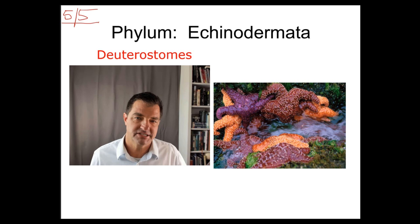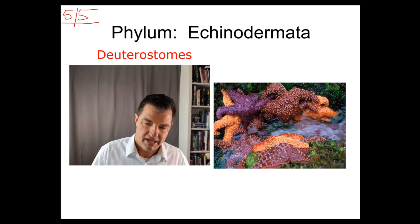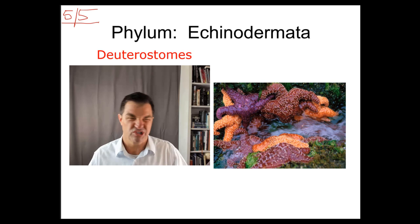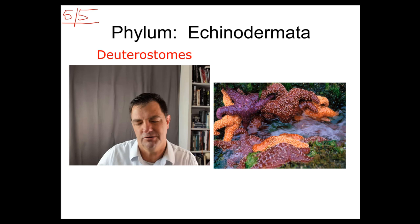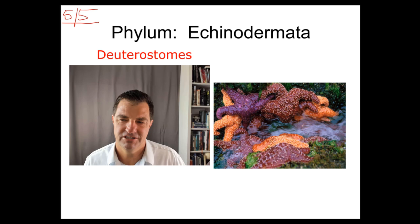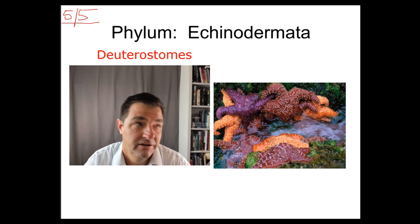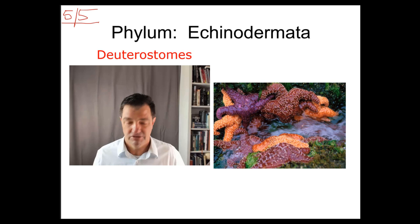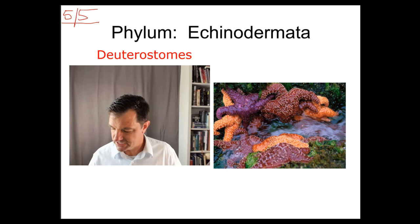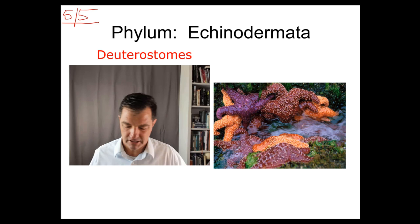Hi everybody, welcome back. We're going to finish off the lecture I didn't quite get to last time — the last little piece — and that is Phylum Echinodermata. The Echinodermata are things like sea stars, or starfish as we used to call them as kids. A lot of people don't like that term now because the 'fish' part makes people think it's a fish, and I've run into people who really do think that. So sea stars and other animals in that group are many tide pool organisms we could see on a field trip.